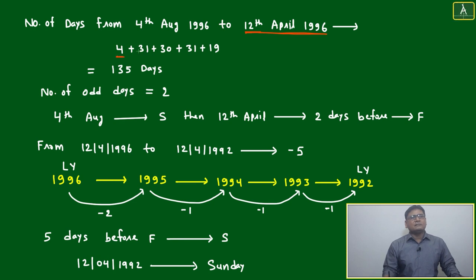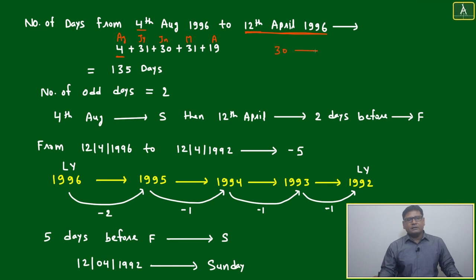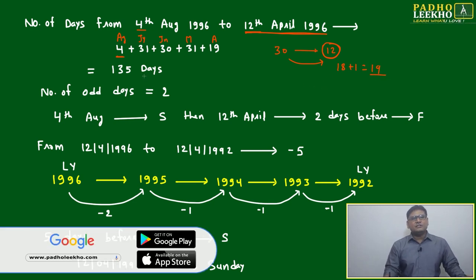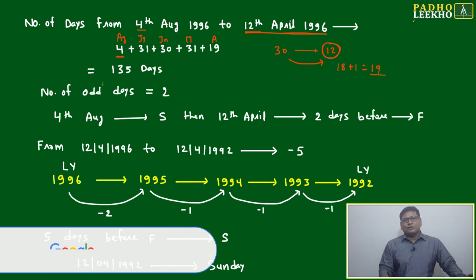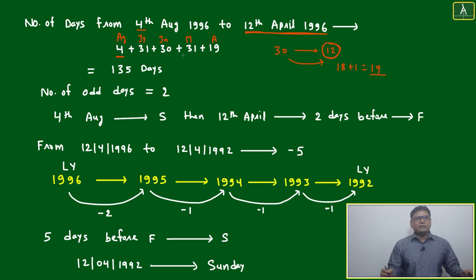For the calculation, going backward from 4th August: August has 4 days, July 31, June 30, May 31, and April — since we need 12th April inclusive, it is 30 minus 12 = 18, plus 1 = 19 days. This small inclusion mistake we must avoid for solid accuracy. So April counts as 19 days. Total = 4 + 31 + 30 + 31 + 19 = 135 days. 135 divided by 7 gives 2 odd days.